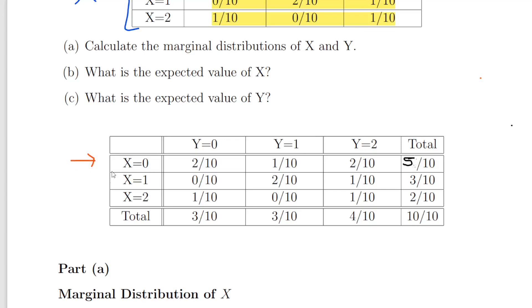Essentially the marginal distributions are the row totals and column totals of the probabilities. What we do is calculate the sum of each row. So 2 over 10 plus 1 over 10 plus 2 over 10, that gives us 5 over 10. So that means overall X equals 0, 5 out of 10 times, 50% of the time.